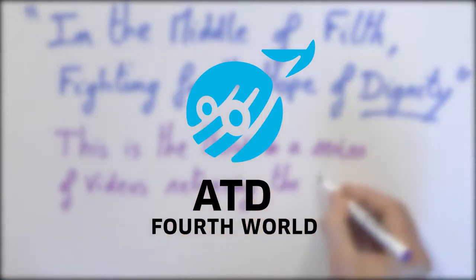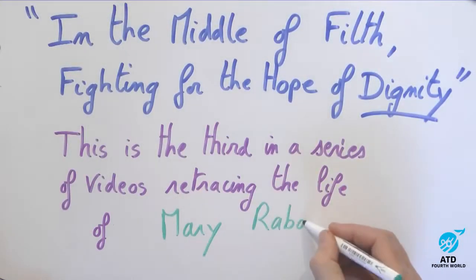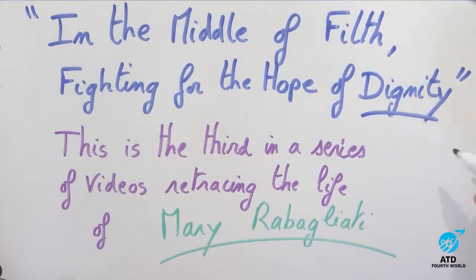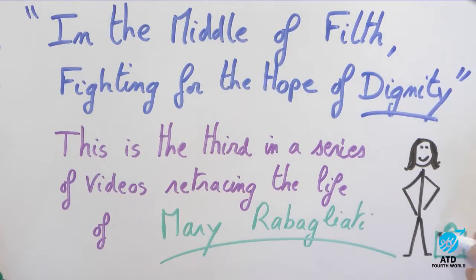This series of videos retraces the life of Mary Rabagliati. In the previous video, she left her native England at age 20 to work with Father Joseph Brzezinski in an emergency camp for homeless families in France.